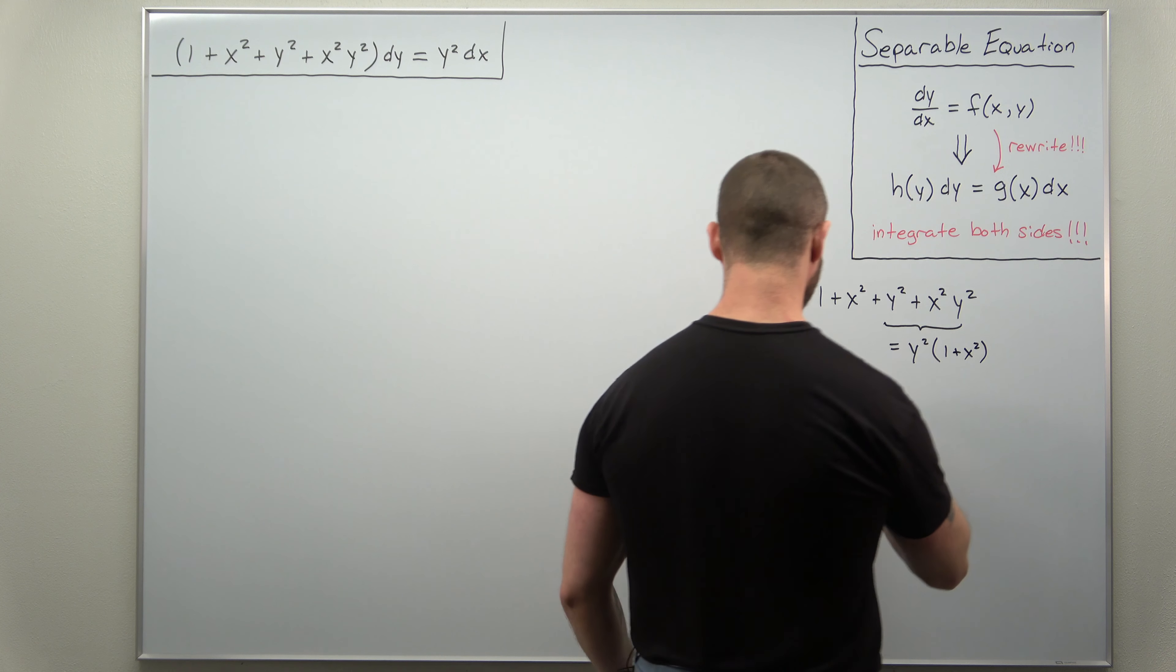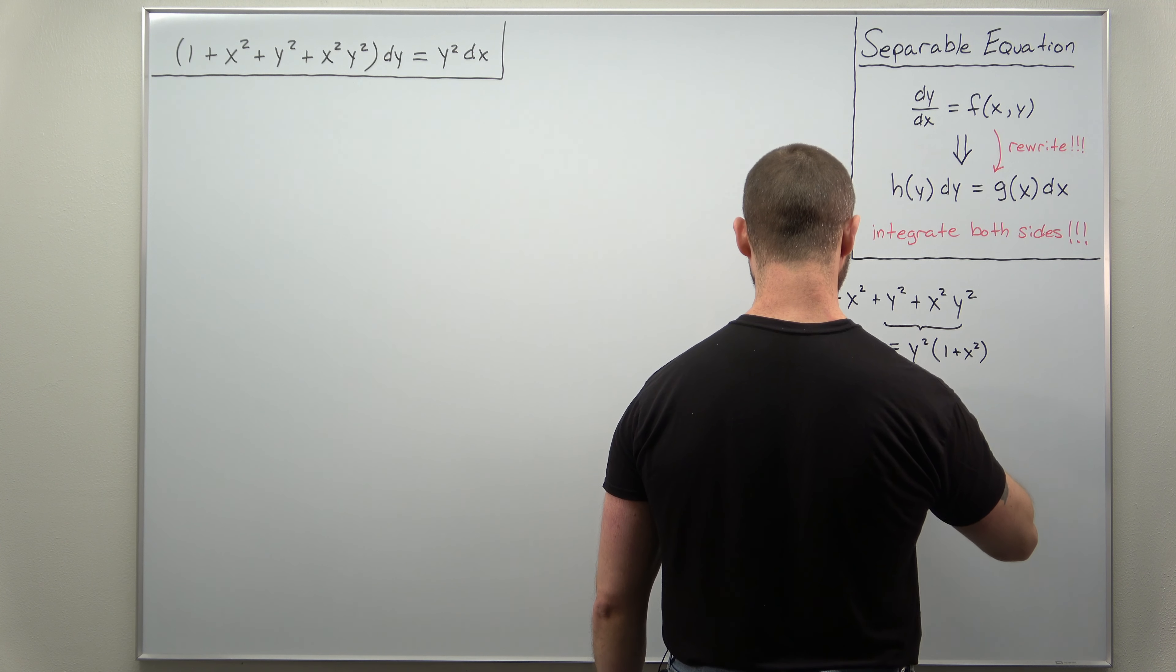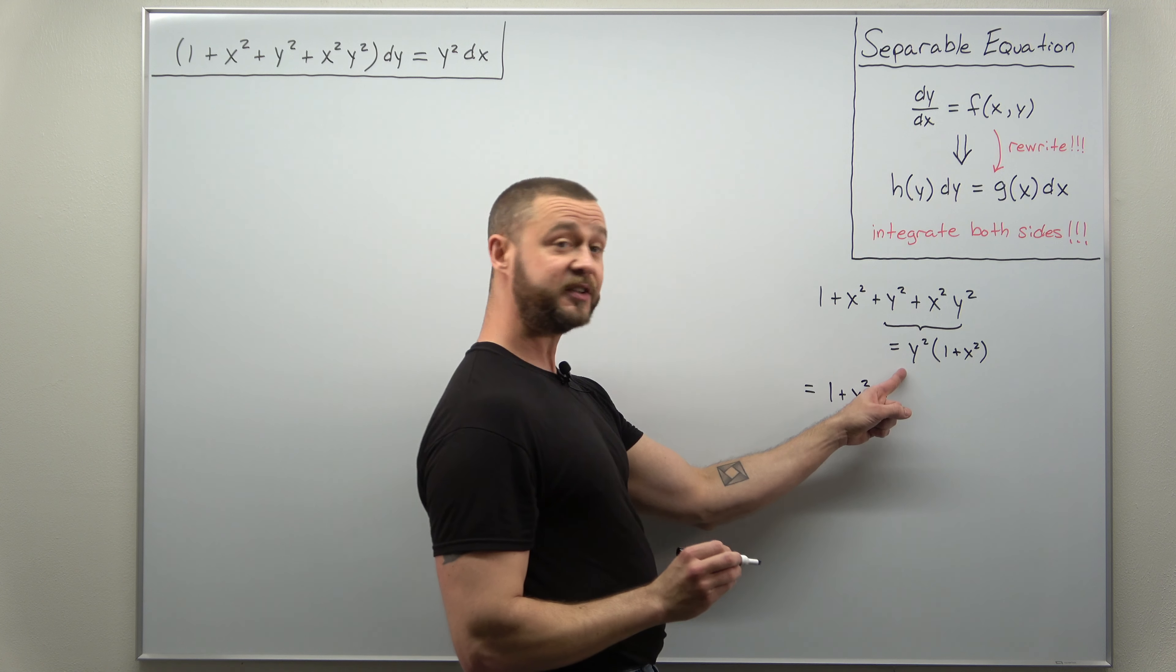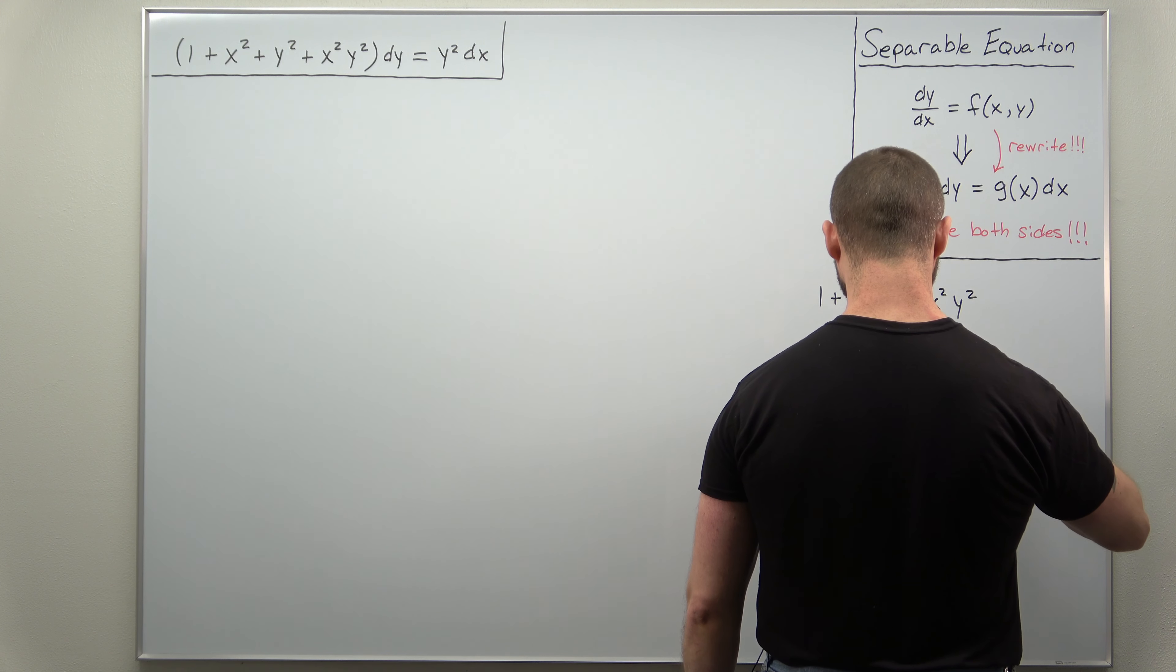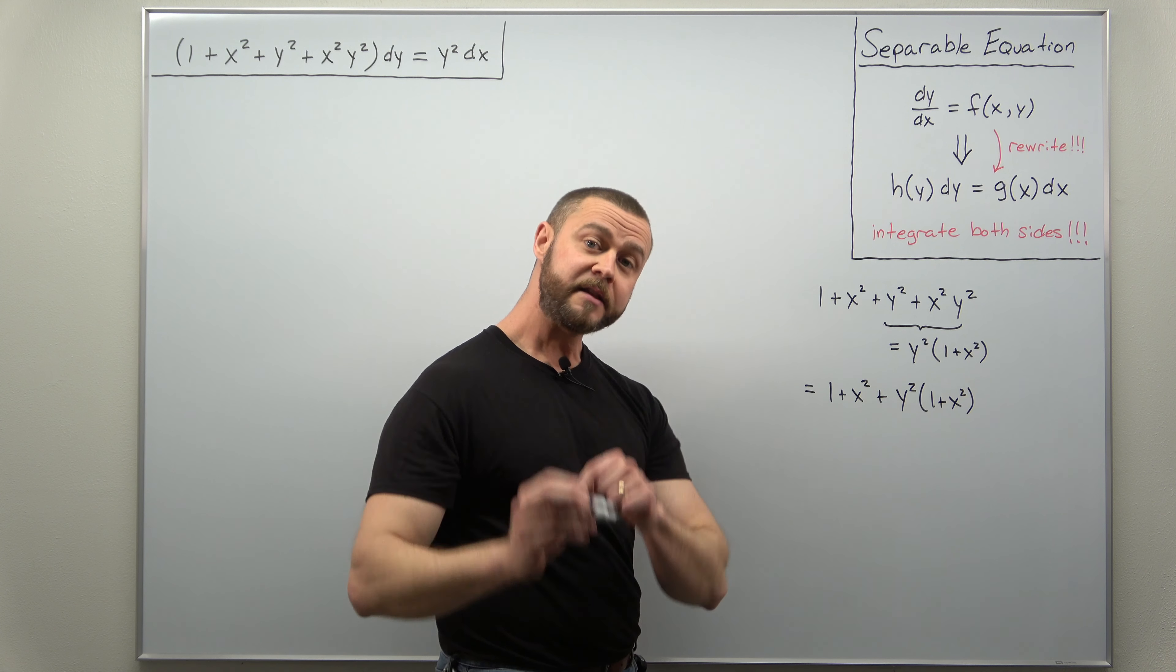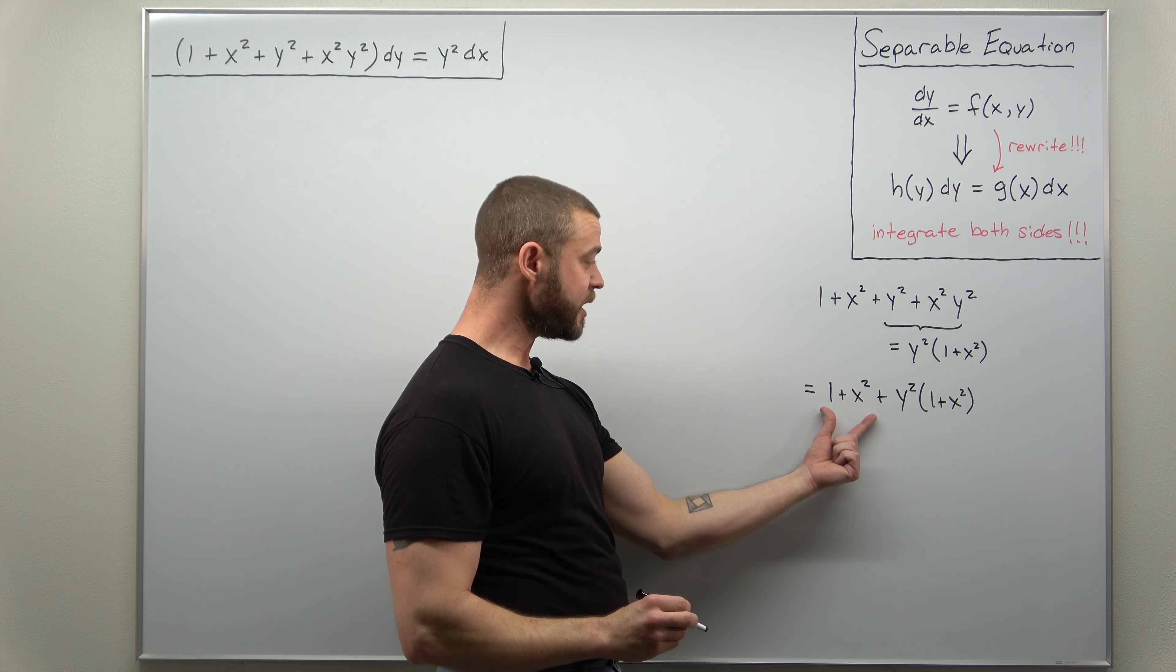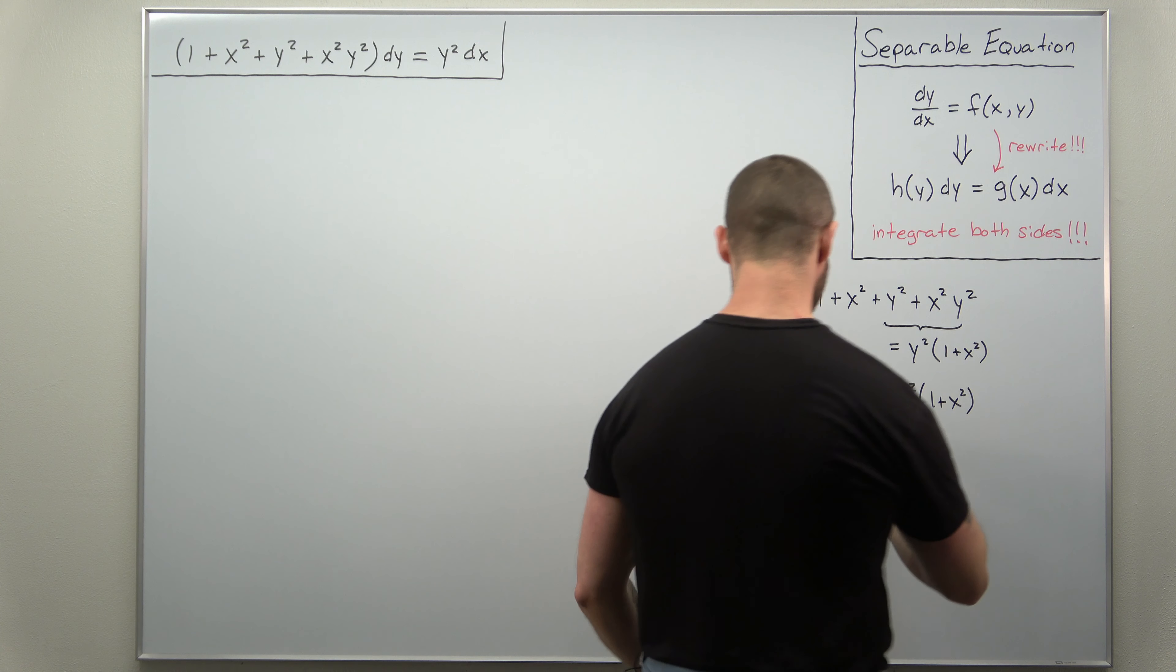So let's go ahead and drop that work down. We have 1 plus x squared, the first two terms, but plus now y squared times 1 plus x squared. And to make it really obvious, let me rewrite the first two terms in parentheses with a factor of 1 in front.